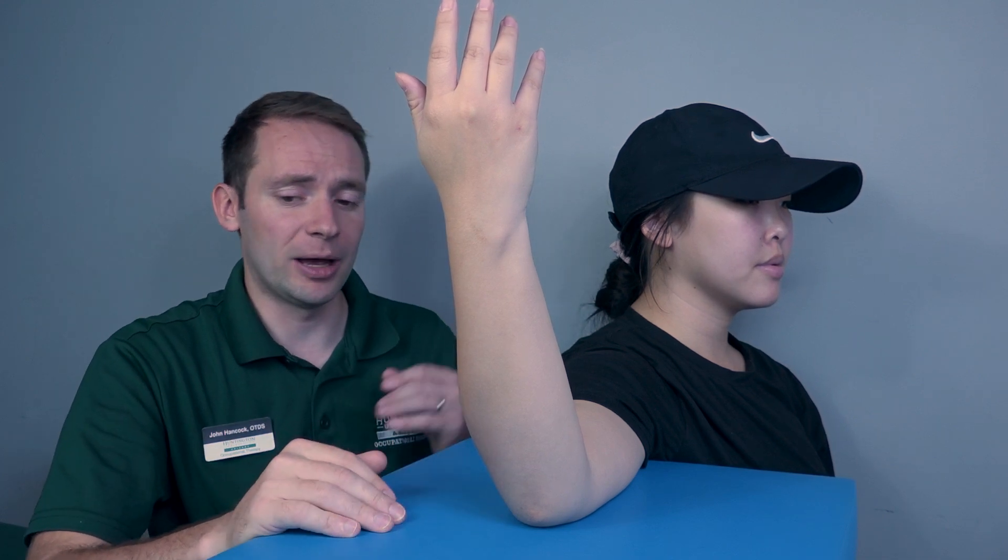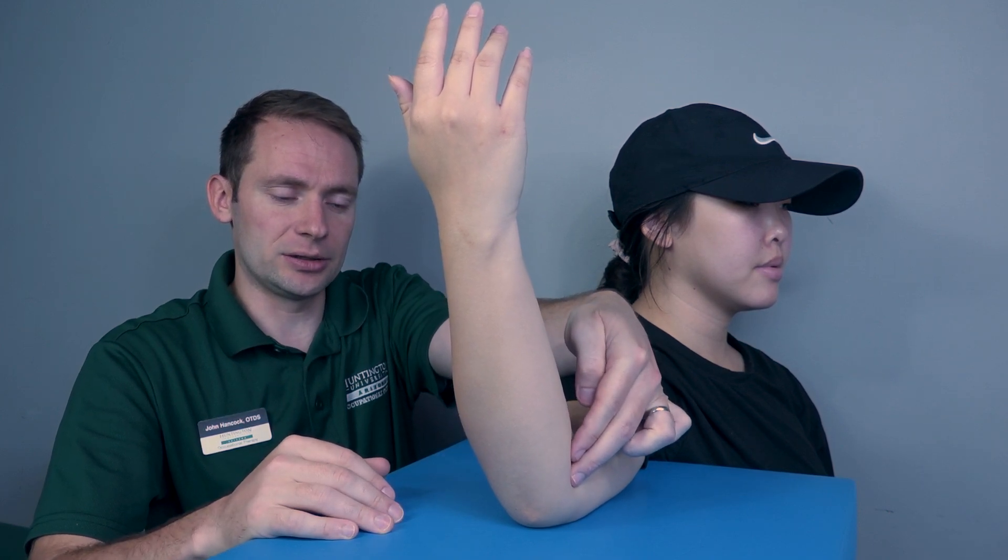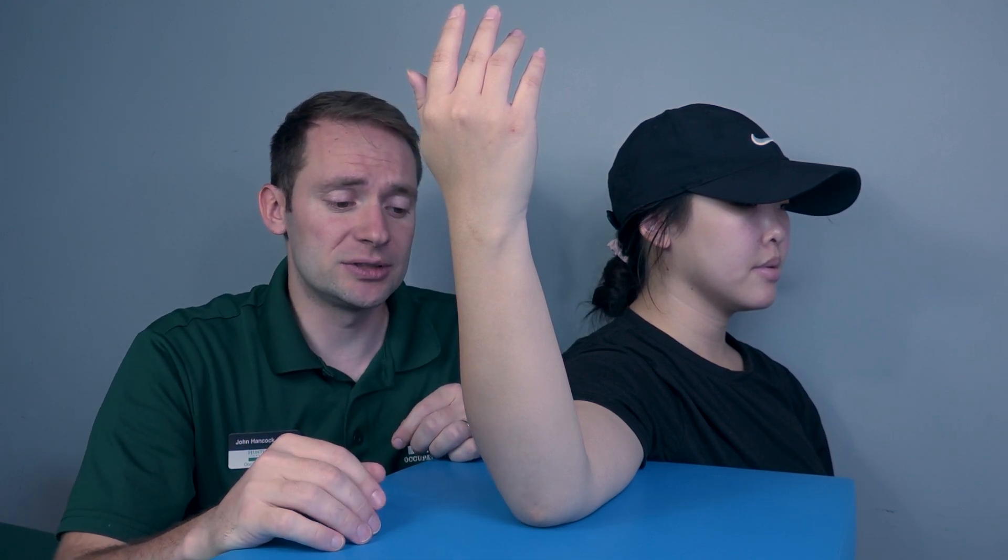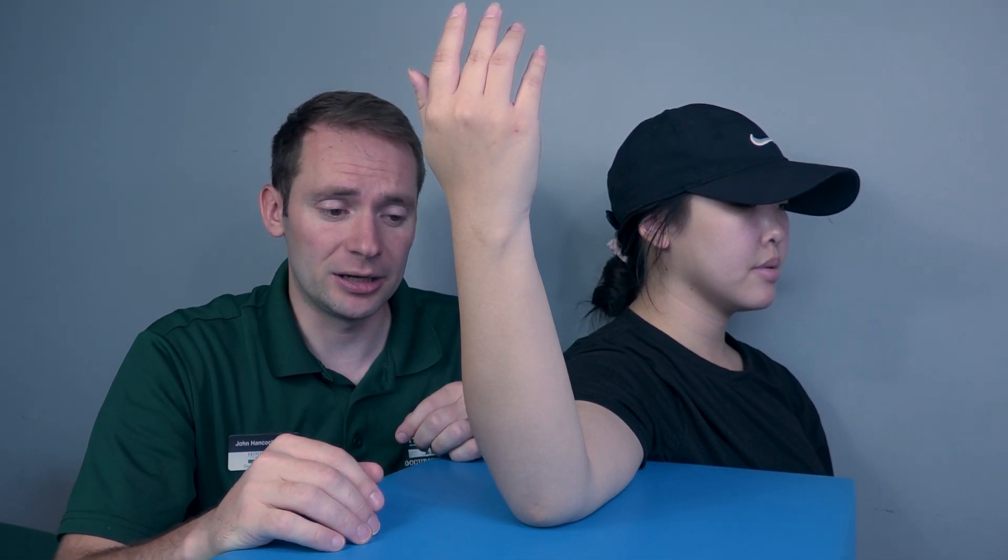Then I will palpate for the pronator teres, which is found just about right here. Now you can see a little better. If I feel this muscle firing, that's going to be a one. If I do not feel it firing, that's going to be a zero.